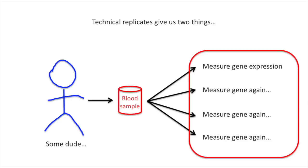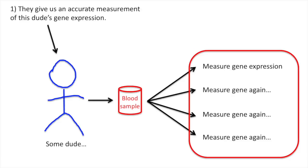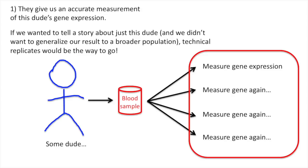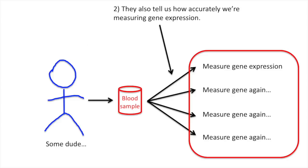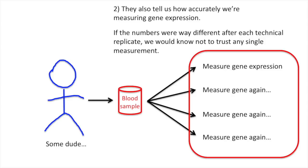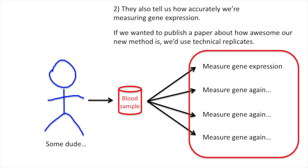Technical replicates give us two things. One, they give us an accurate measurement of this dude's gene expression. If we wanted to tell a story about just this dude and we didn't want to generalize a result to a broader population, technical replicates would be the way to go. Technical replicates also tell us how accurately we're measuring gene expression. If the numbers were way different after each technical replicate, we would know not to trust any single measurement. If we wanted to publish a paper about how awesome our new method is, we'd use technical replicates.